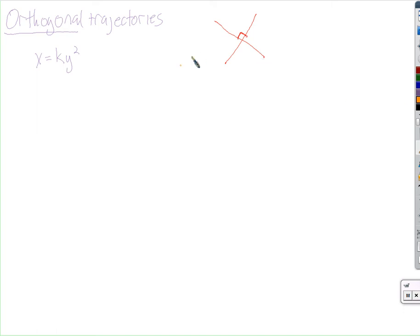So we're going to be finding curves that are orthogonal to each other. Actually, we're going to be finding families of curves that are orthogonal to each other, that are perpendicular to each other at every point.